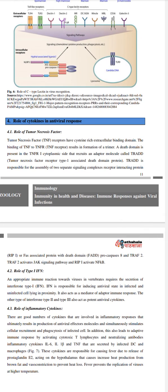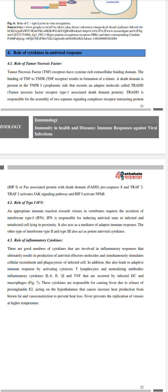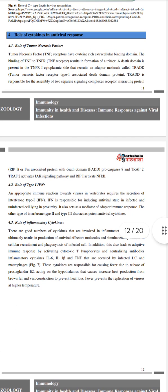Role of cytokines in antiviral response. Role of tumor necrosis factor (TNF): TNF receptors have cysteine-rich extracellular binding domains. Binding of TNF to TNFR results in formation of a trimer. The death domain present in TNFR1 recruits an adapter molecule called TRADD (tumor necrosis factor receptor type 1-associated death domain protein). TRADD assembles two separate signaling complexes: receptor-interacting protein (RIP) and FAS-associated protein with death domain (FADD), pro-caspase-8 and TRAF-2. TRAF-2 activates JAK signaling and RIP-1 activates NF-κB.